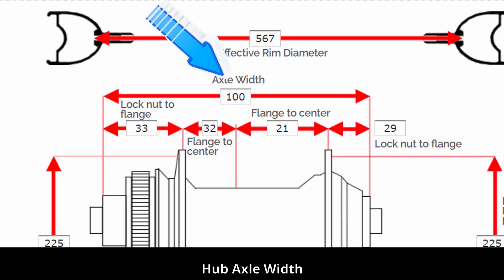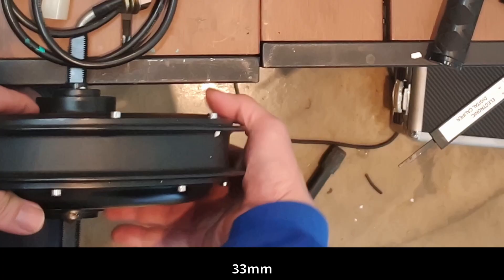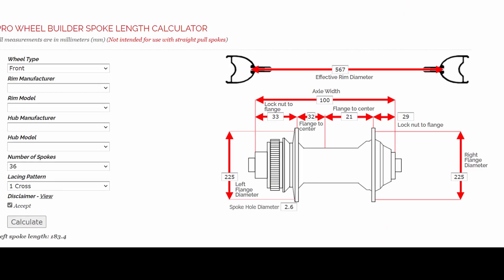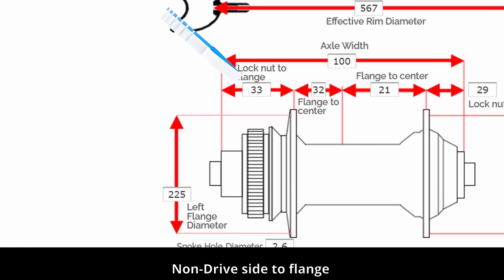Hub axle width: 33 millimeters non-drive side to flange.